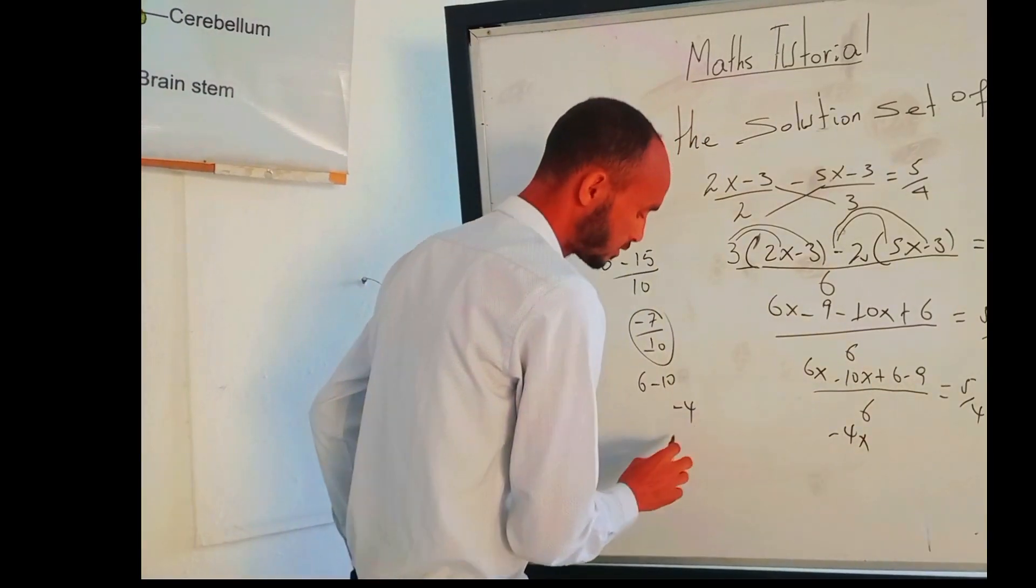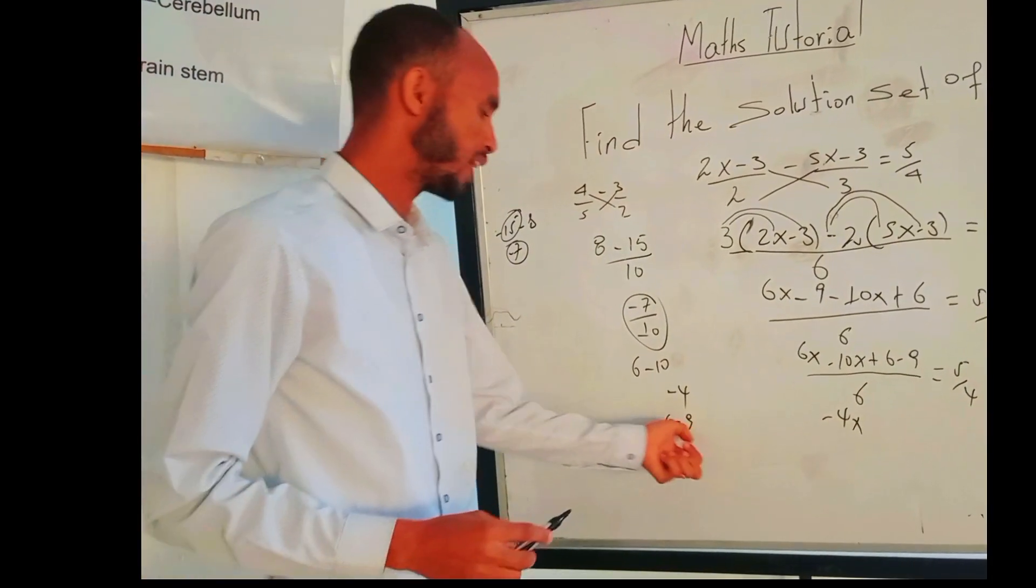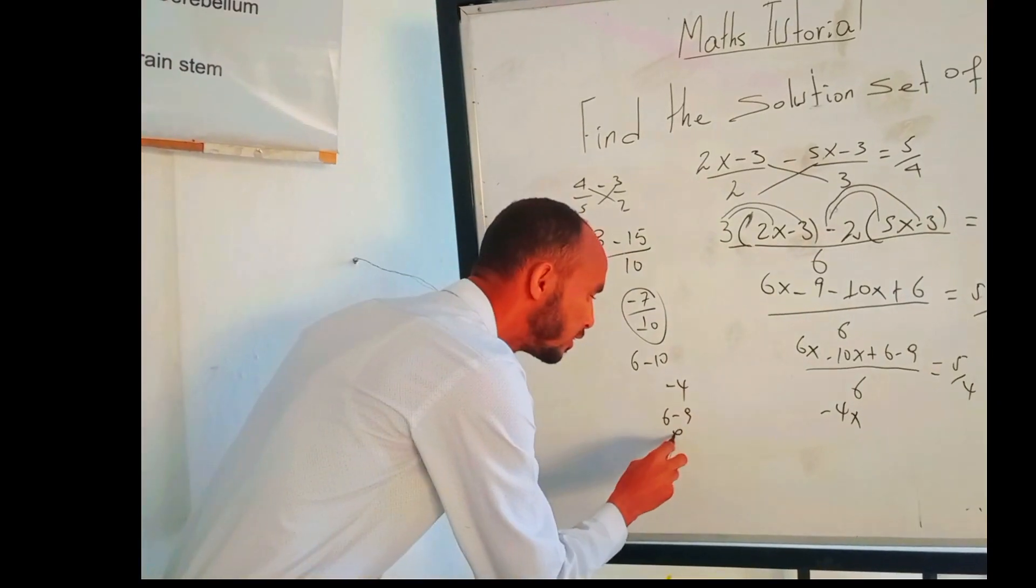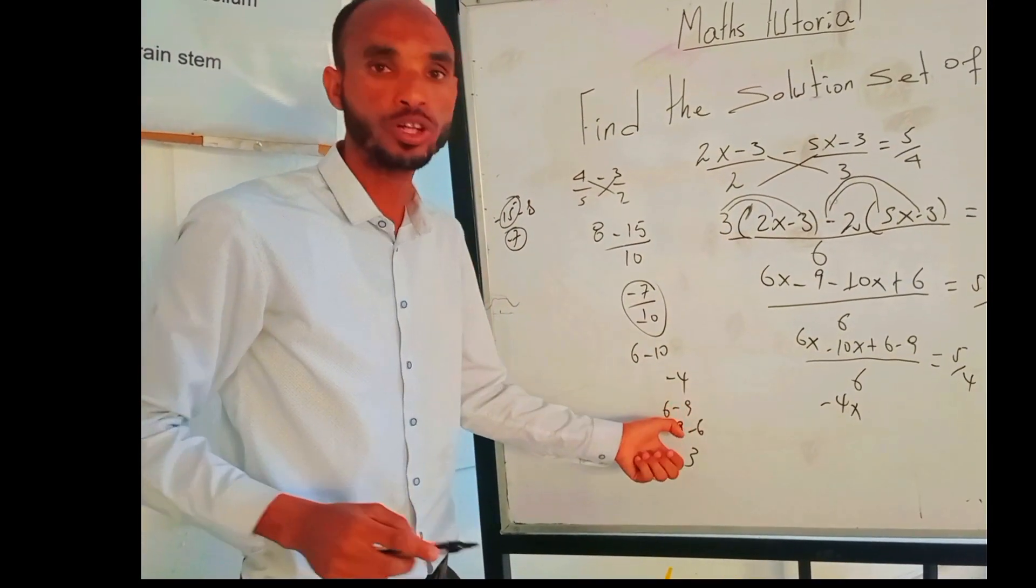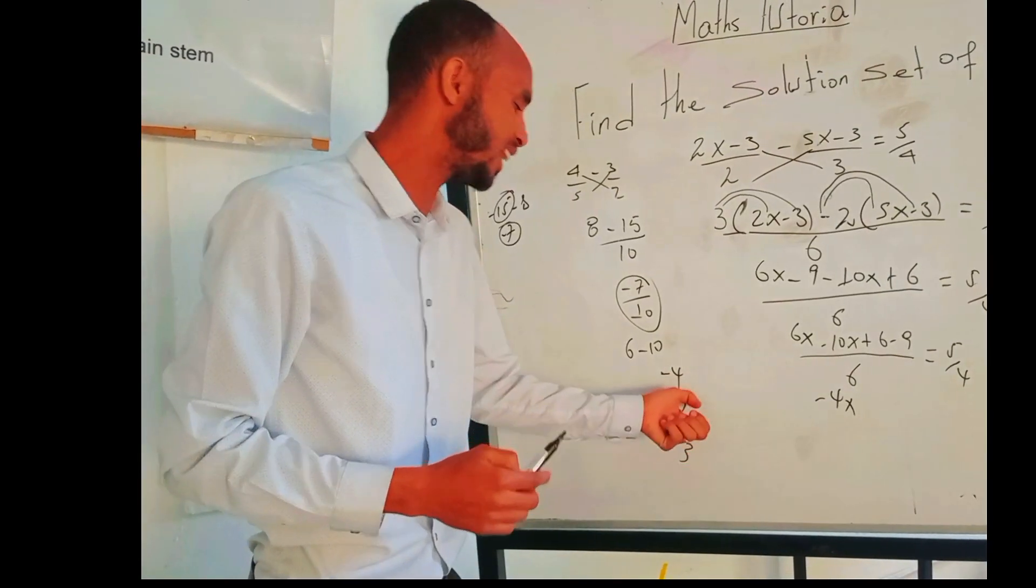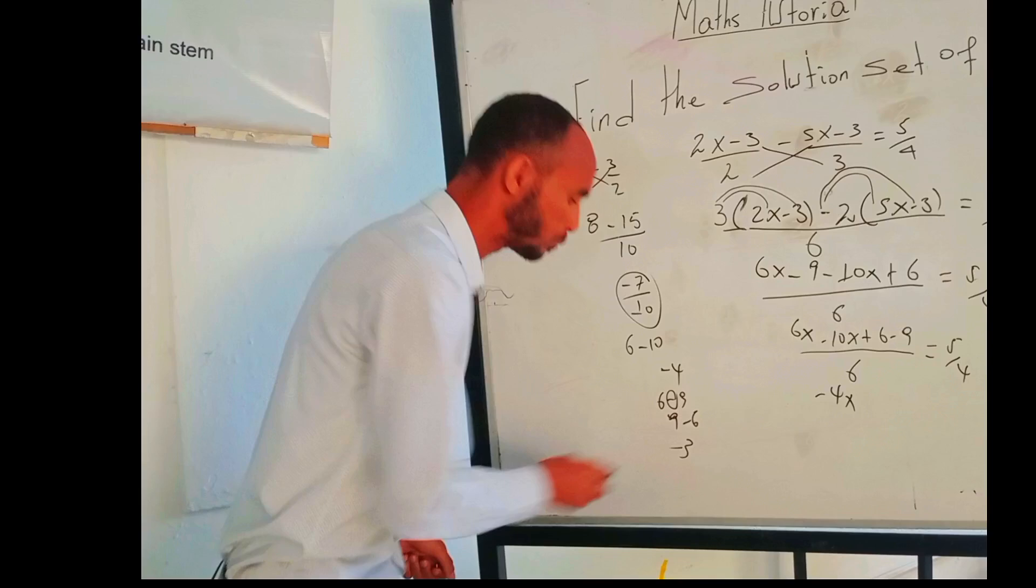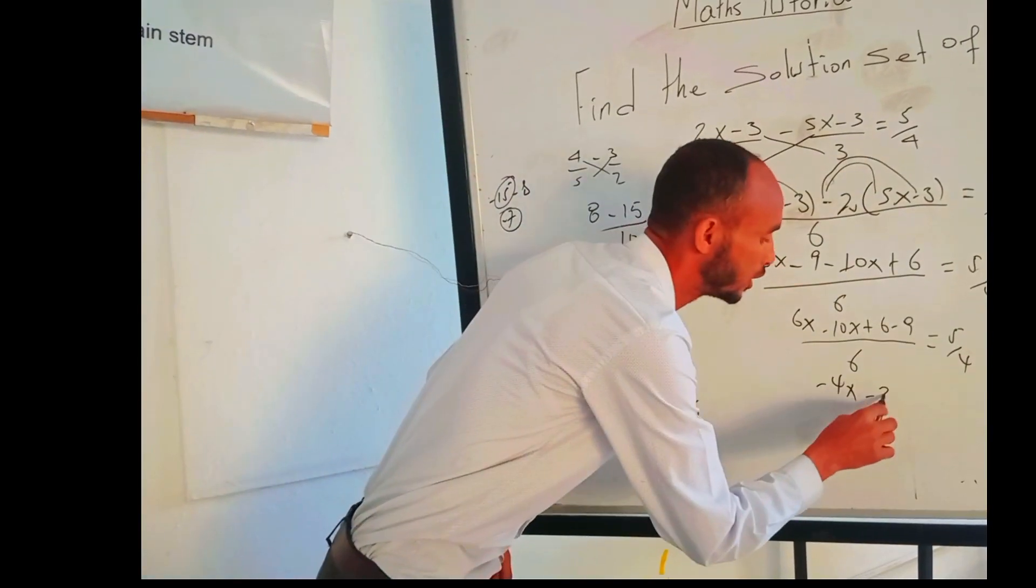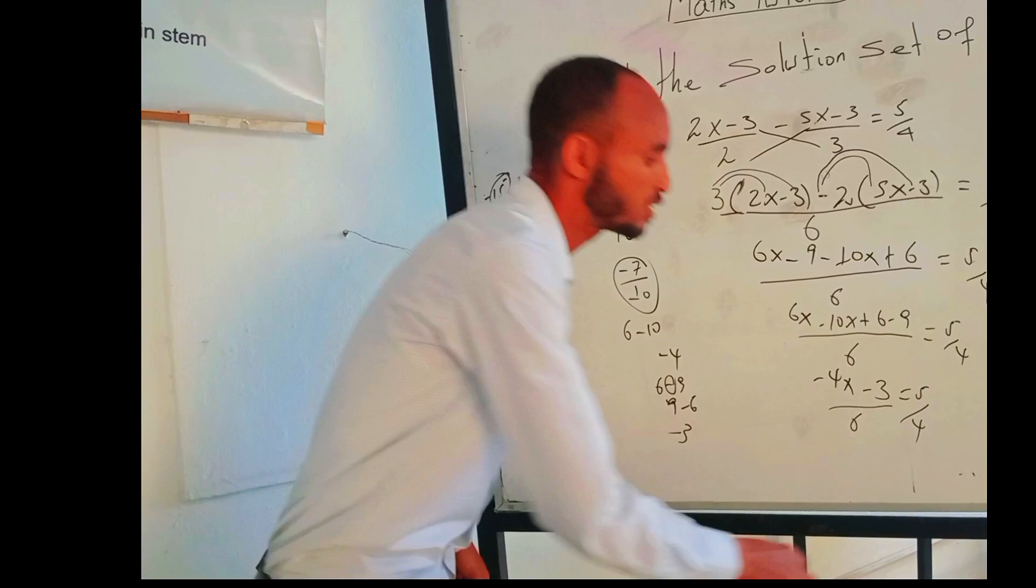Again, 6 minus 9 is 9 minus 6 is 3. Now we are looking, as I told you before, 9 minus 6 is 3, and 9 is negative, so we have to put negative sign. So negative 3 over 6 equals 5/4.